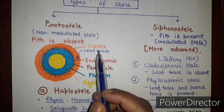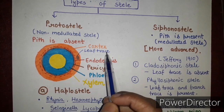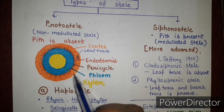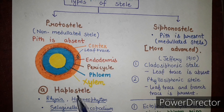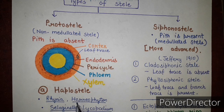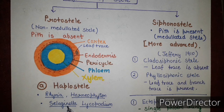When labeling a diagram, always label sequentially from outside to inside: cortex, leaf trace, endodermis, pericycle, phloem, then xylem. This makes the diagram systematic and clear. Examples of haplostele are Rhynia, Horneophyton — which are fossil pteridophytes commonly asked in objective questions — as well as Selaginella and Lycopodium.